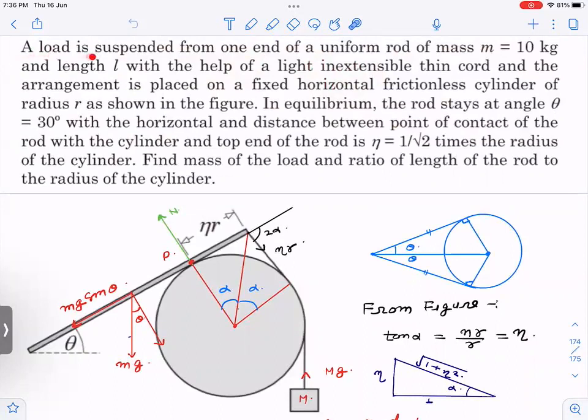The question is: there's a load which is suspended from one end of a uniform rod of mass m. This is the uniform rod you can see in the diagram, and mass of that is given. The length is also given, and it is connected with the help of a light inextensible thin cord. The arrangement is placed on a fixed horizontal frictionless cylinder of radius r.